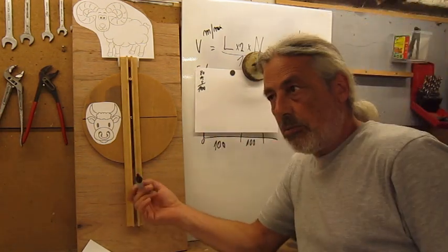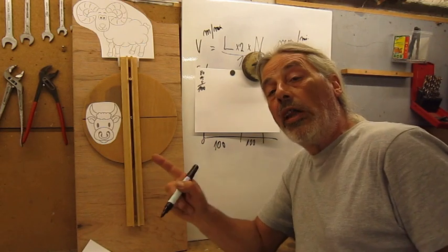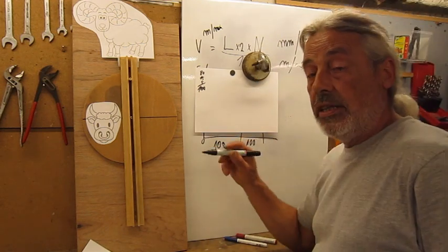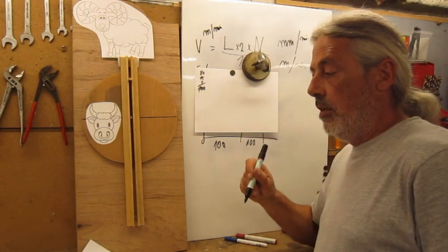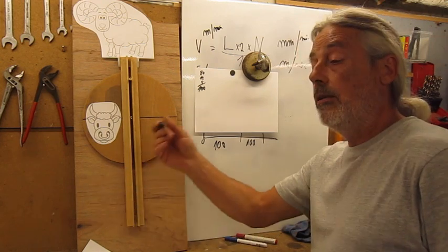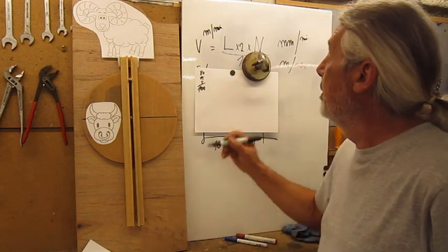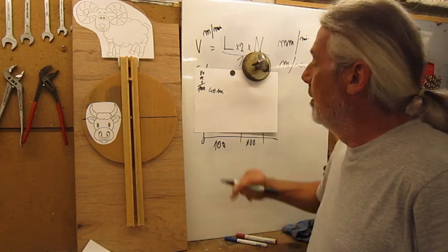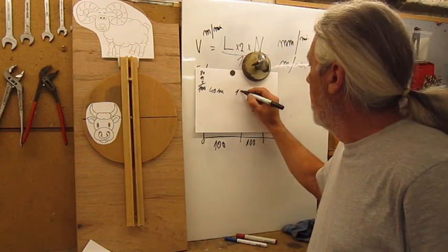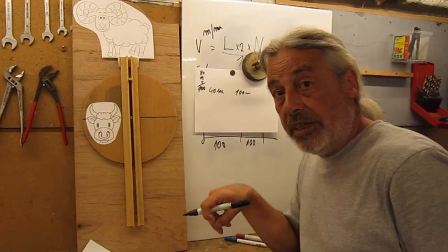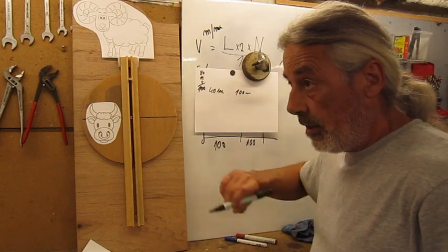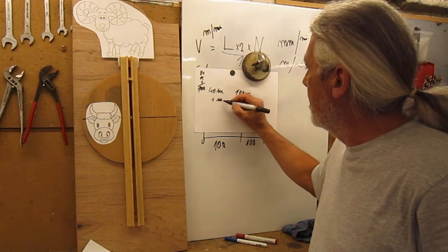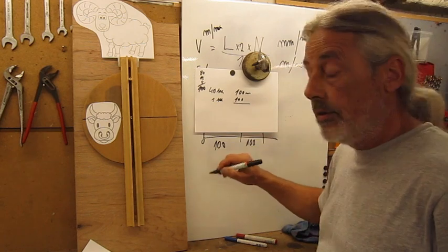Imagine the machine is running at 1 stroke per minute. That means two thirds of 60 seconds — so 40 seconds — is the cutting stroke, and 20 seconds is the backstroke. We travel 100mm in 40 seconds, so in 1 second we do 100 divided by 40.